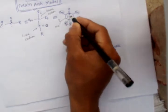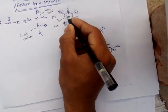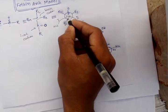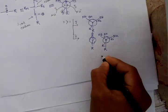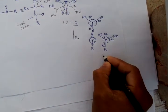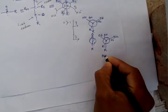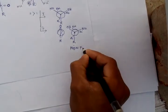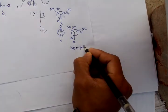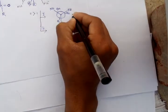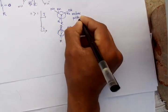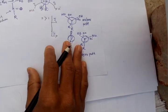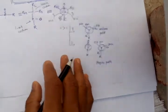Attacking from path one side is very difficult compared to path two. So path two is the major product and path one is the minor product. But we need to consider whether this minor product is actually found or not.